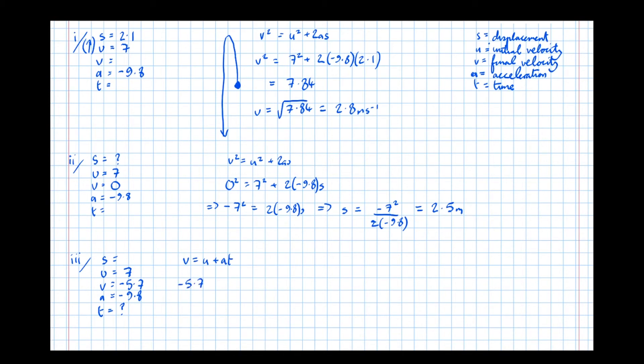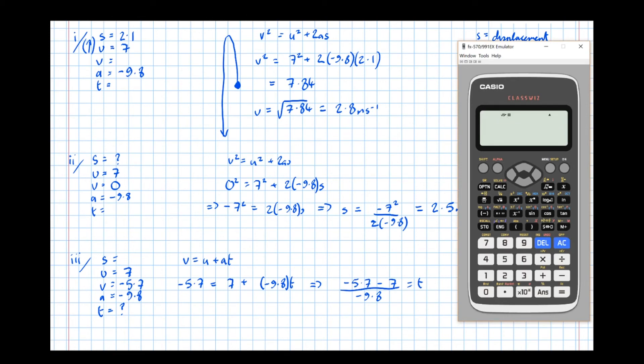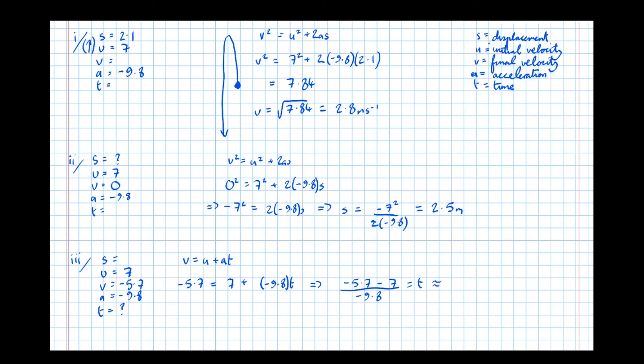So minus 5.7 equals 7 plus minus 9.8t. Which then implies that minus 5.7 minus 7 over minus 9.8 equals t. And putting that in the calculator, minus 5.7 minus 7 over minus 9.8 equals 1.30 seconds to three significant figures.